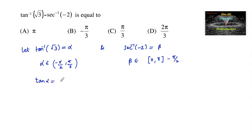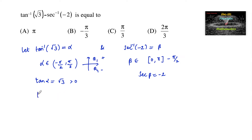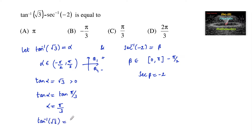So we can write tan alpha equals root 3 and secant beta equals minus 2. Since tan alpha equals root 3 is positive, and in the range minus pi by 2 to pi by 2, tan is positive in the first quadrant. So tan alpha equals tan of pi by 3, because tan 60 degrees is root 3. Therefore alpha equals pi by 3, meaning tan inverse of root 3 equals pi by 3.